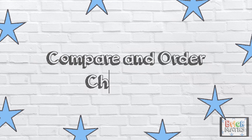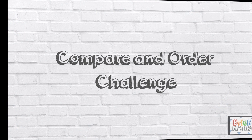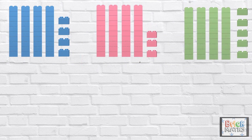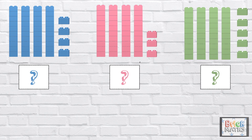Comparing numbers challenge 1. Here are three different amounts. How many bricks are in each group? Which colour has the least amount of bricks, and which colour has the most? Pause the video to give you time to work out the answer. Press play when you're done.